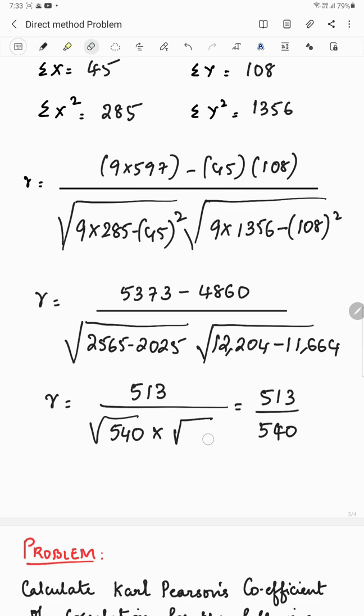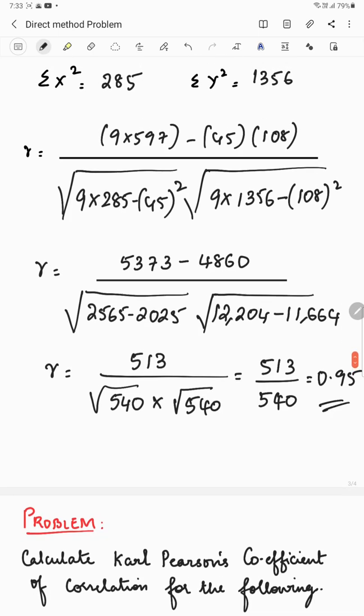That is 513 divided by 540. I made a mistake. This is also 540. Under root 540 into under root 540 is 540 only. So you get the final answer 0.95. 0.95 is a correlation value.